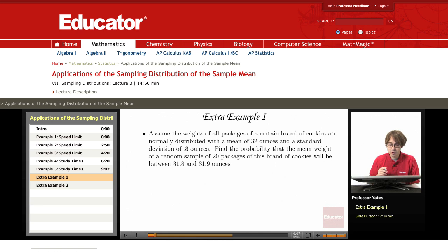So the first one: assume the weights of all packages of a certain brand of cookies are normally distributed with a mean of 32 and a standard deviation of 0.3. We find the probability that the mean weight of a random sample of 20 packages of this brand of cookies will be between 31.8 and 31.9 ounces.